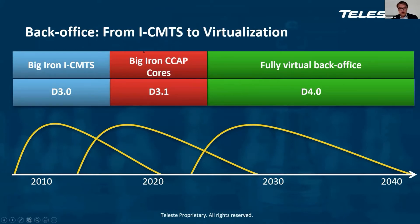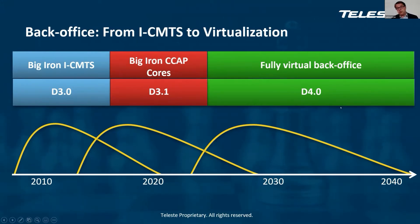Looking at the timings one by one: back office was classically built with integrated CMTSs during the 3.0 era. That has moved already to mainstream DOCSIS 3.1 deployments, but still on Big Iron CCAP cores mainly. When moving towards 4.0, there is very much a consensus that this Big Iron will be replaced with fully virtualized back-office cloud-native applications — some of which are already being deployed during the 3.1 era.